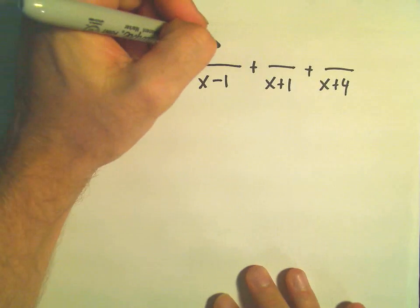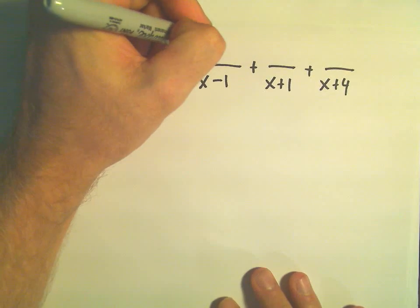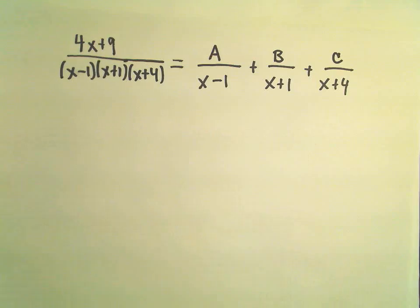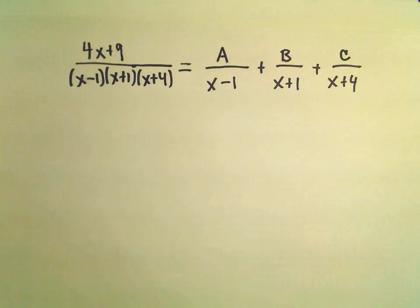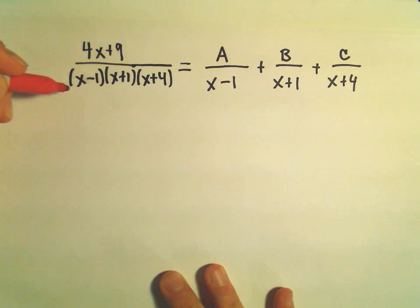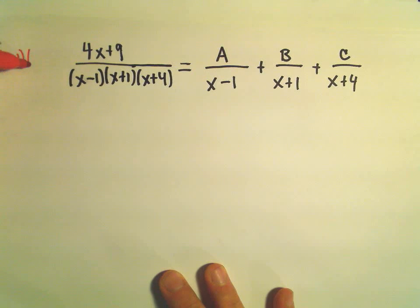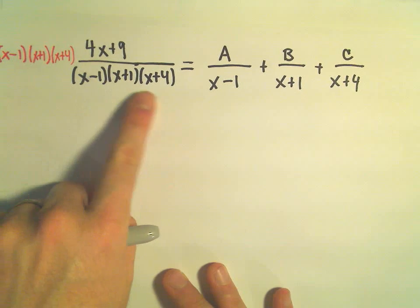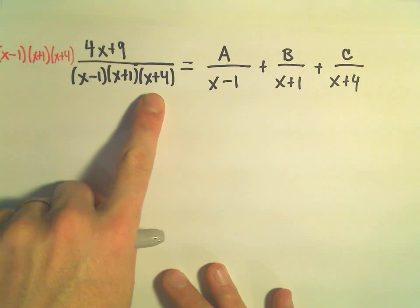On top I just stick constants — generic constants A, B, and C. Our goal in this problem is to figure out A, B, and C. Same way I did my other example, I get rid of my denominators and multiply both sides by whatever the denominator is of my original rational function.